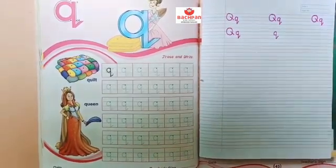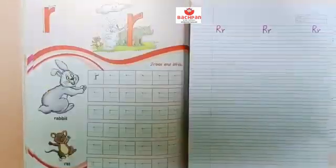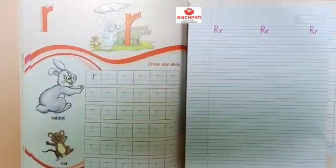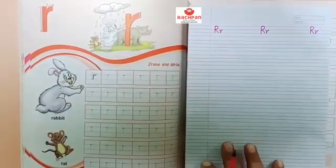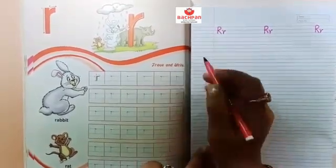Q for queen. Q for quilt. After Q which letter has come? The letter R.